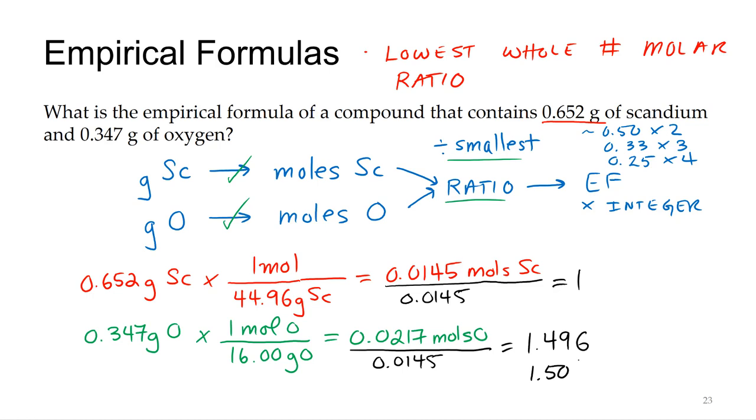But of course when we put this in a formula, we're going to put it in whole numbers. So I've got to multiply by an integer, since it isn't a whole number. It hit 0.5 exactly with the significant figures. So 1.5 to 1, we'll multiply both of those by 2, and we get a 2 to 3 ratio. So the formula for this would be scandium Sc2O3. And that's the empirical formula for this compound.